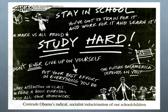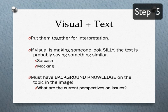One more example: we have a dark chalkboard image. The text track shows things written on a school chalkboard: 'Stay in school, make us proud, study hard, don't ever give up.' Great things. But then there's an additional text track at the very bottom that says 'Comrade Obama's radical socialist indoctrination of our school children.' So we have two different sets of text going on within that image.